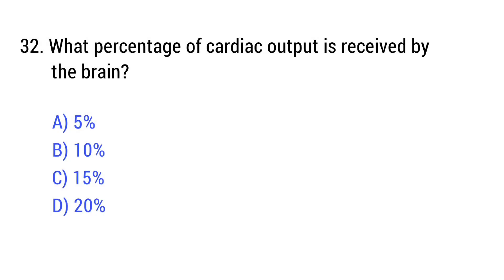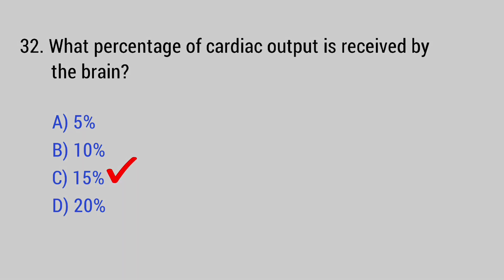Question number 32. What percentage of cardiac output is received by the brain? The right answer is option C: 15%.